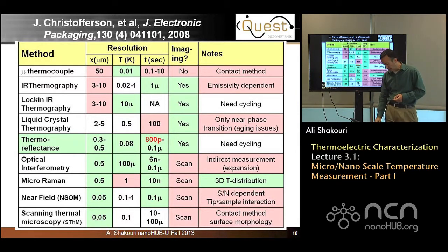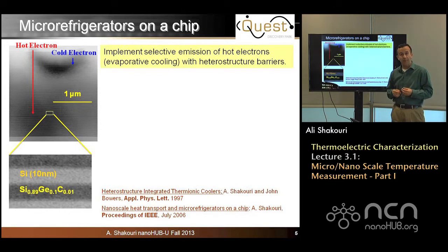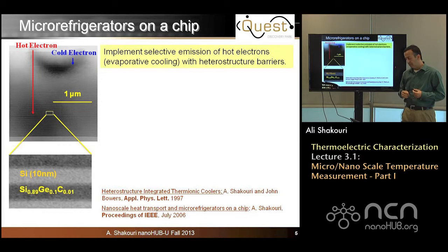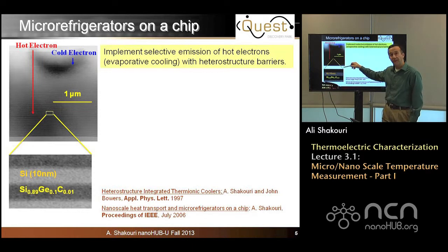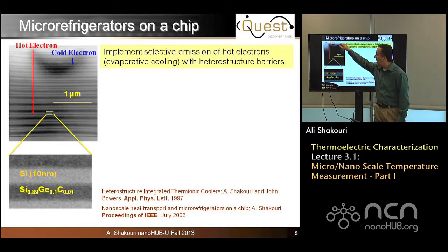Instead of introducing the techniques abstractly, I want to give you an example of what a given technique produces for a microscale device. The microscale device we are considering is a micro-refrigerator on a chip. In some of the earlier lectures by Professor Landstrom, you saw that multi-barrier and single-barrier devices could act as a refrigerator. In this case, we have a 3 micron thick silicon/silicon-germanium superlattice — one-tenth of the thickness of a human hair. The layers of silicon and silicon-germanium, with a little carbon, are chosen so that hot electrons move in the material while cold electrons cannot.